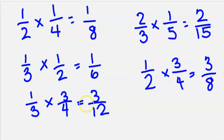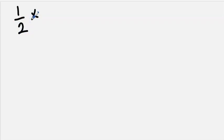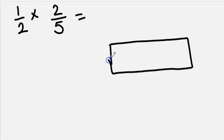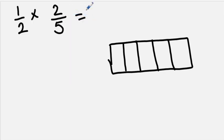Do you think this will always work? Let's try a new problem and see. If we have one-half times two-fifths, I know that's one-half of two-fifths. So let me go ahead and draw out two-fifths — one, two, three, four, and five. I'm going to go ahead and shade in two-fifths of that.